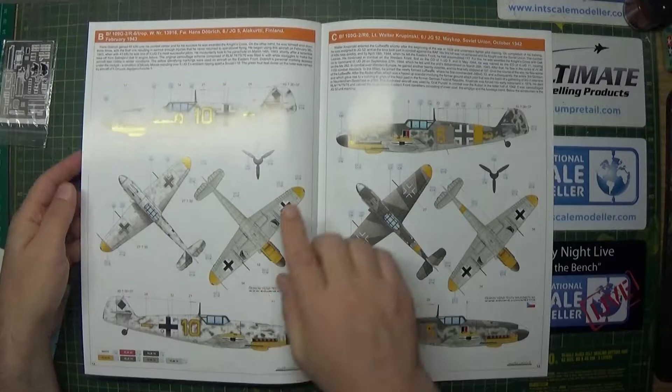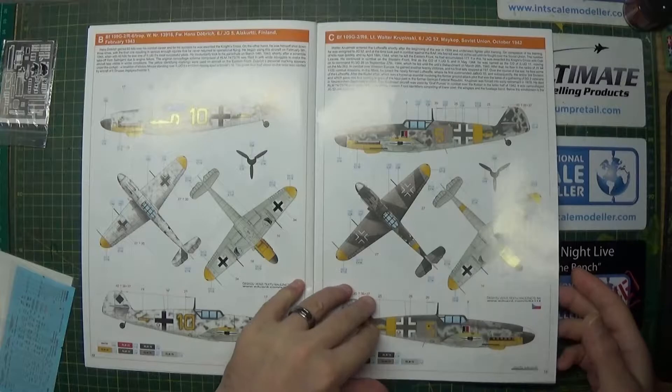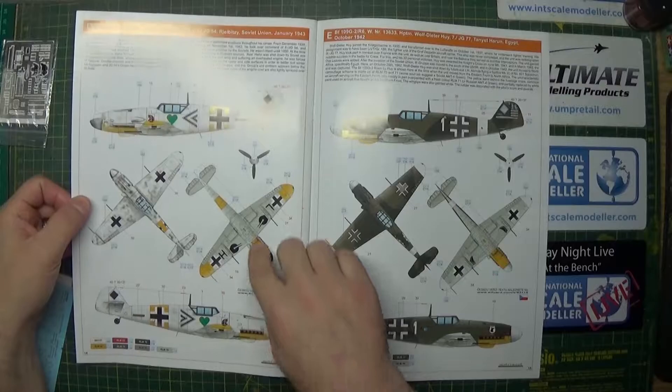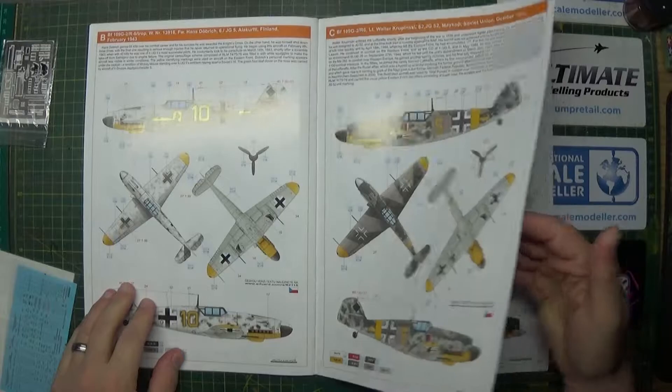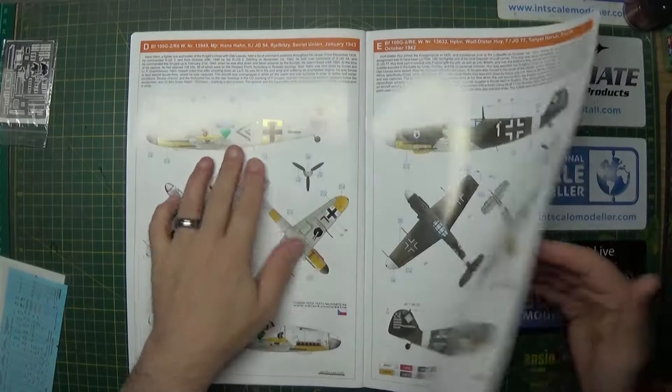Now I'm thinking that I'm going to do one of the winter schemes, either this one or this one. There's a slight mottle effect on these as well, so that'll be interesting. Something like this, but not quite as pronounced. So we have several choices, but like I said, I think it's going to be one of the winter schemes.